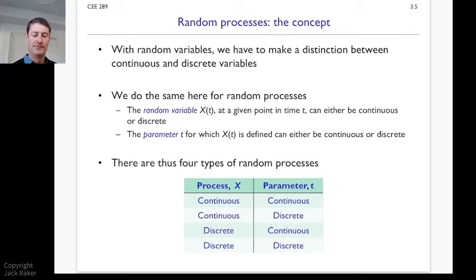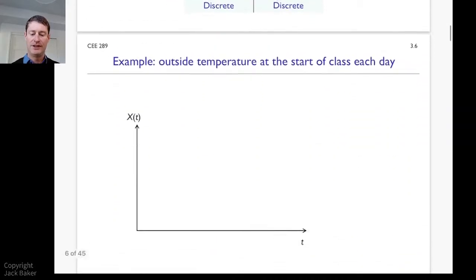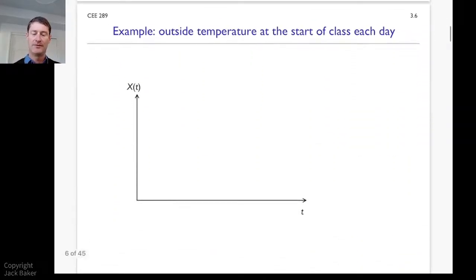And so let's just kind of think through very briefly what those could look like. So we could think about each class, when we start class, what's the temperature outside, right? And so in this case, we're going to have kind of time being the class number or the index being the class number. And we'll have kind of class one, class two, class three, and so on.